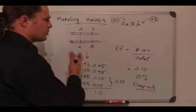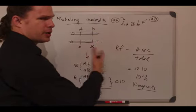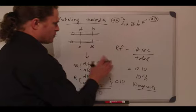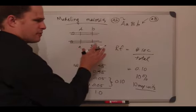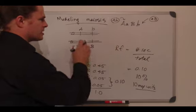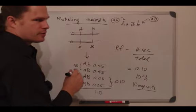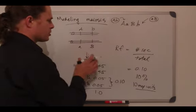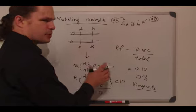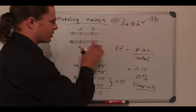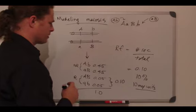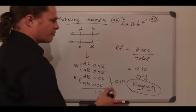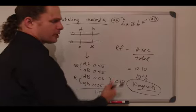Now that we've actually sequenced genomes and measured the number of nucleotides between known loci, we've determined that recombination frequency is generally a very good proxy for physical distance. However, different regions of the genome may have crossovers more frequently than others, so the actual number of nucleotides in a map unit is not constant — it depends on what part of the genome you're in, or what organism you're in.